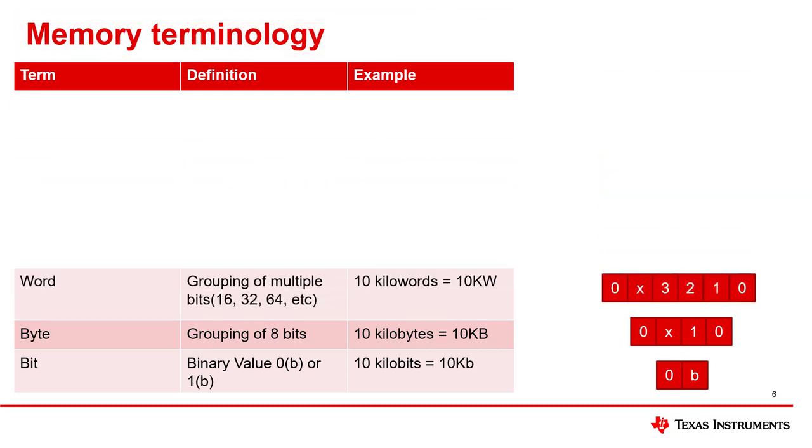Next is the word notation. The length of a word can vary depending on the CPU architecture in your embedded system. A word may be 16 bits, 32 bits, or more. This is notated by an uppercase W, so 10 kilowords would be written as 10 KW.